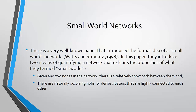Watts and Strogatz in 1998 wrote what is now a very well-known paper that introduced the formal definition of a small world network. In particular they define two quantities of a network: the average path length and the clustering coefficient. They said graphs that have a short average path length and have a high clustering coefficient are what we will call small world.